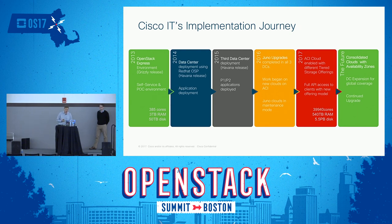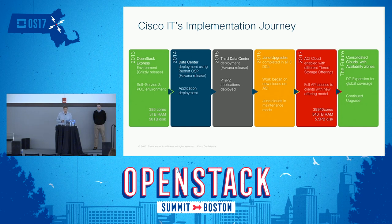We provided high-priority support and put it into multiple data centers to meet clients' needs. Up until last year, we upgraded our clouds all the way to Juno, and then we stopped — we've put them into maintenance mode. We're not deploying any new features on those clouds. Instead, our strategy is to deploy new clouds utilizing the Metaka code base, really focusing on our software-defined networking available at Cisco, and then make those available for our application teams.